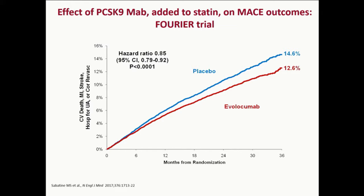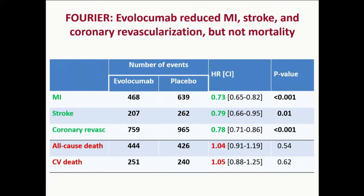This translated into a reduction in the primary five-part MACE outcome of about 15%, which was highly significant. Looking more closely at the components, MI, stroke, and revascularization were all robustly reduced with the PCSK9 antibody — hazard ratios of 0.73, 0.79, and 0.78. One would expect this to translate into a mortality reduction. There were almost 900 deaths in this trial, but there was no reduction — in fact, a slight numerical excess of all-cause and cardiovascular mortality in the actively treated group. This is a perplexing finding.